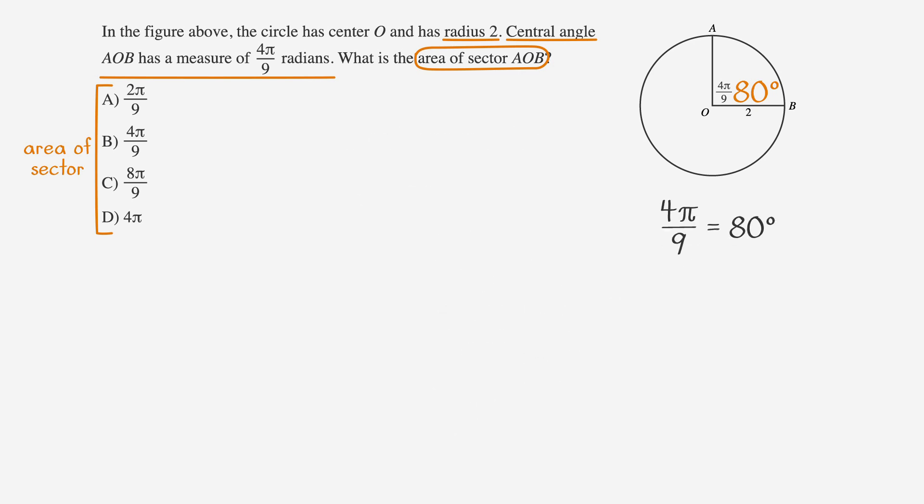We're looking to find the area of sector AOB, which is 80 degrees. We can use our sector area formula. Sector area over total area equals central angle over 360. We're looking to find the sector area, so that's x. The total area of the circle is pi r squared.